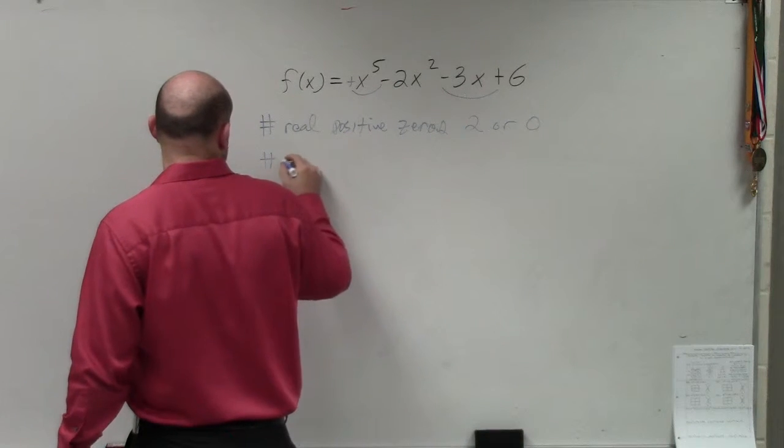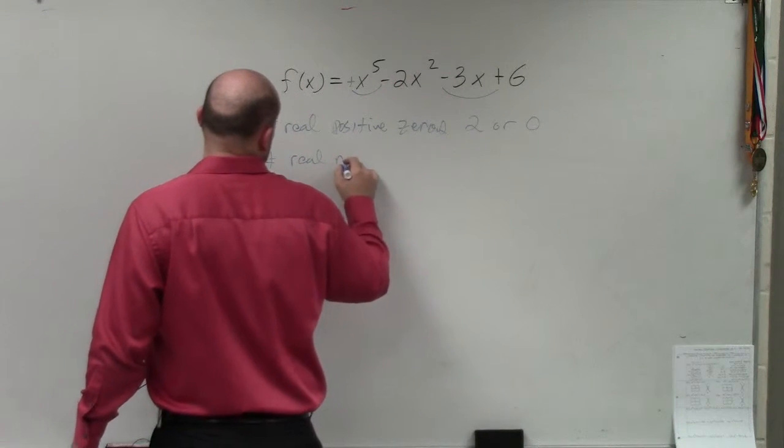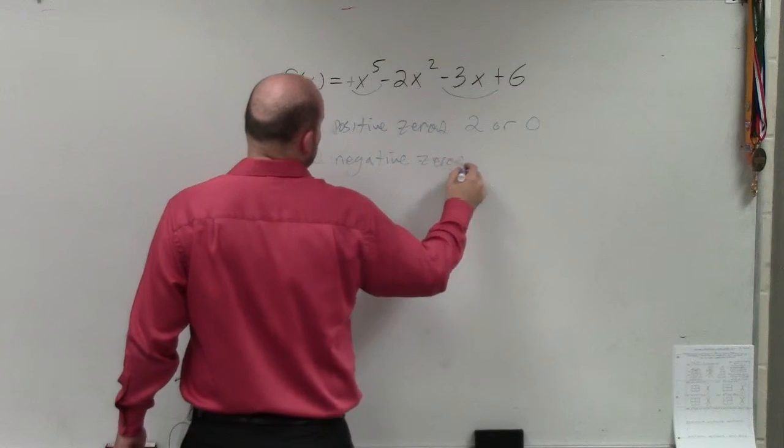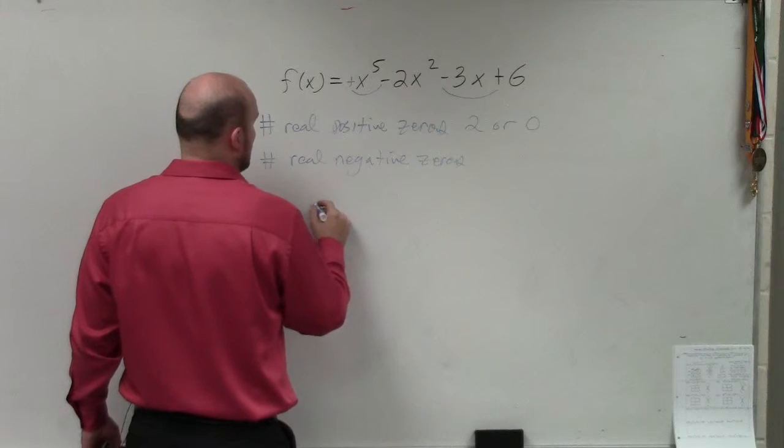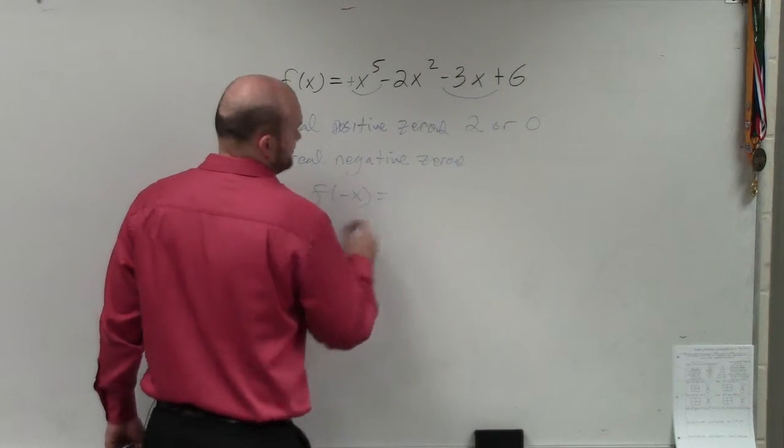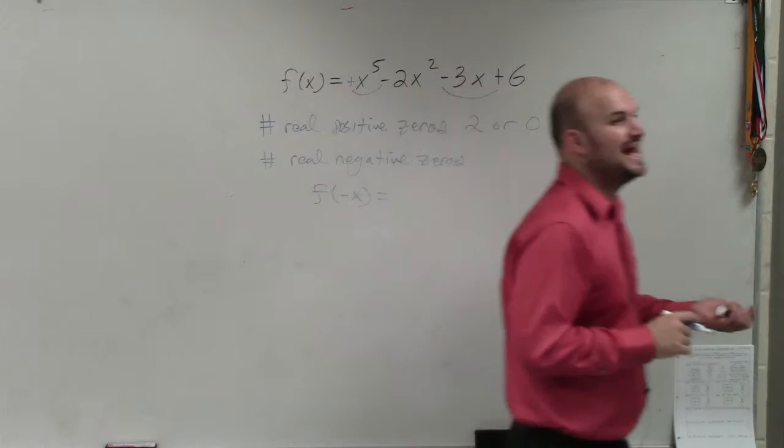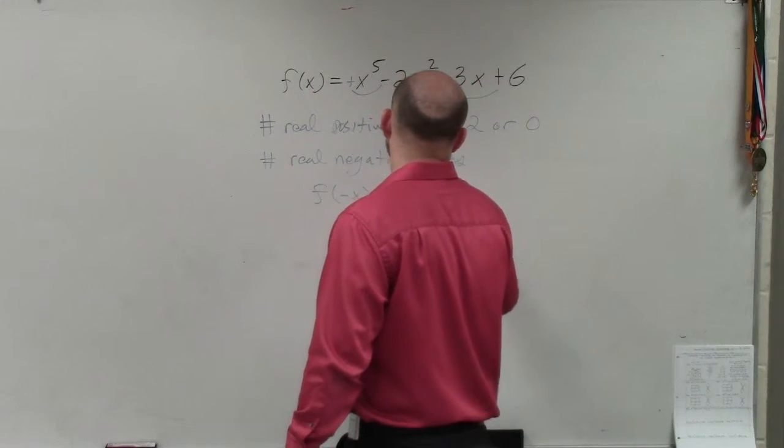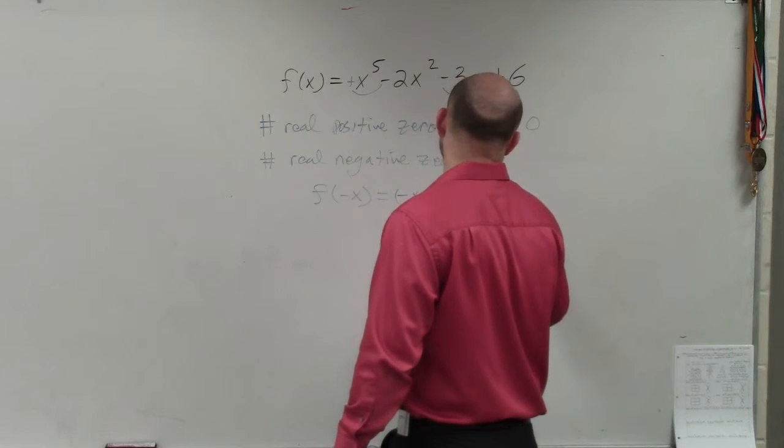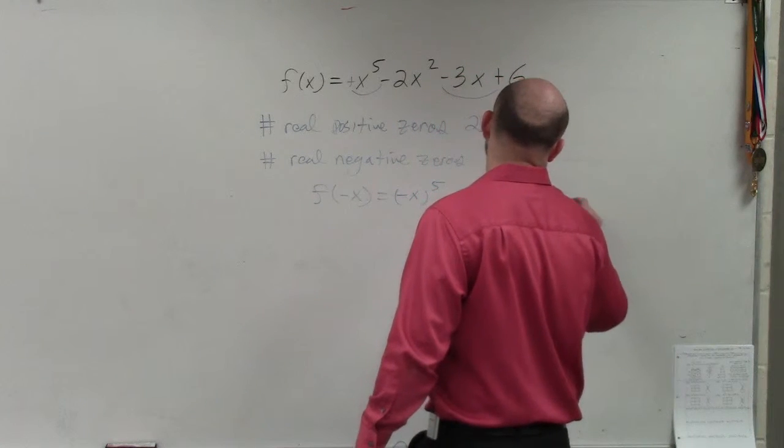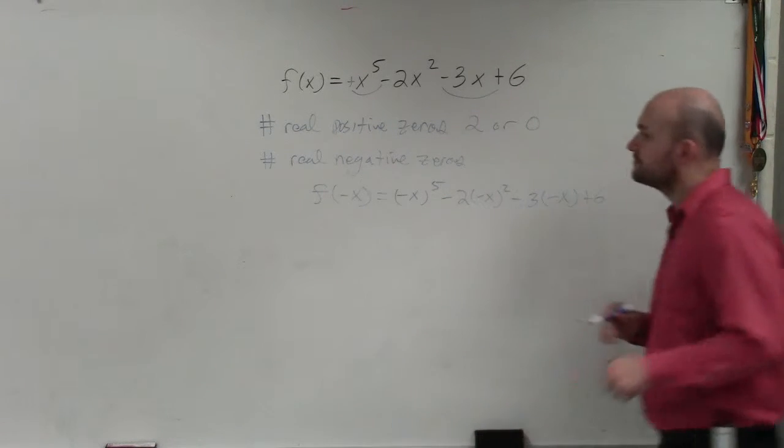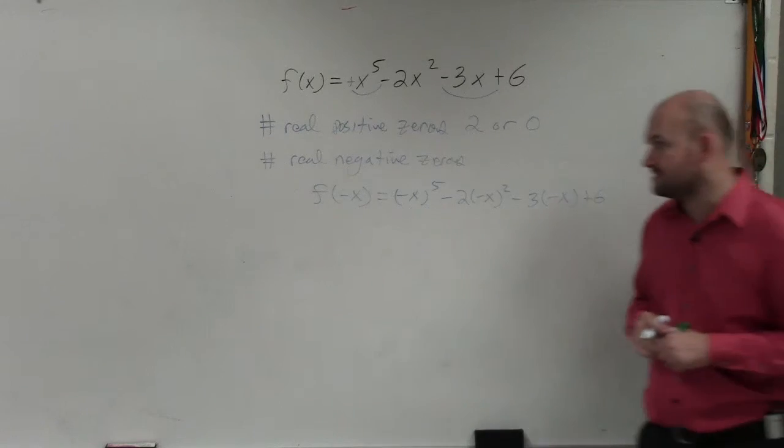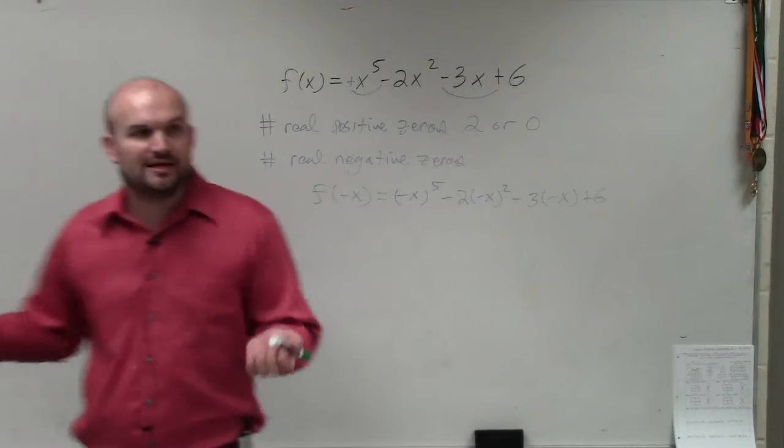To determine the number of negative, what we need to do is we need to determine the number of sign changes for f of negative x. So now, instead of plugging in x, I'm going to plug in f of negative x. So I do negative x to the fifth minus 2 times negative x squared minus 3 times negative x plus 6. Does everybody follow me with that? All I do is plug in negative x. I replaced x with negative x.